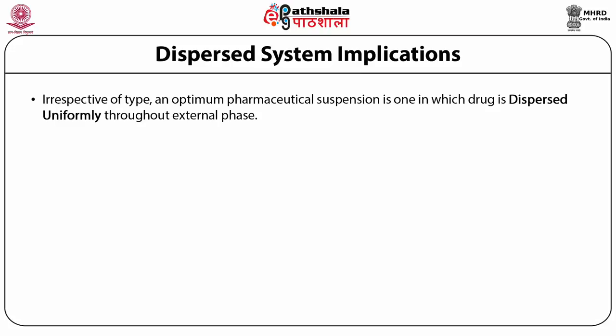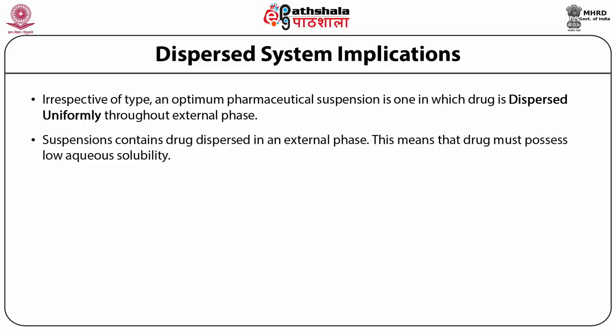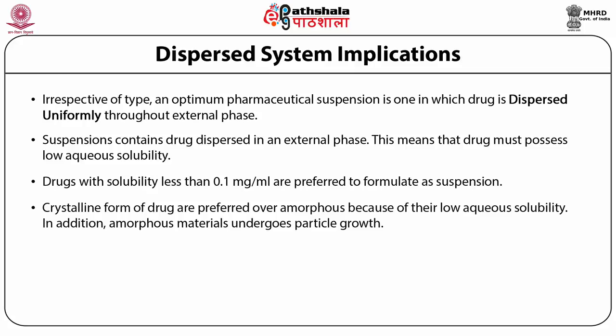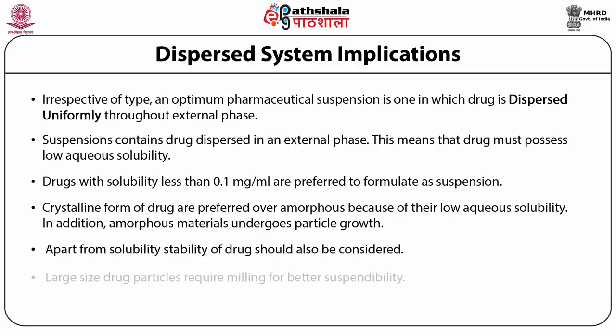Irrespective of type, an optimum pharmaceutical suspension is one in which the drug is dispersed uniformly throughout the external phase. This means that the drug must possess low aqueous solubility. Drugs with solubility less than 0.1 mg per ml are preferred to formulate as suspension. Crystalline forms of drugs are preferred over amorphous forms because of their low aqueous solubility. In addition, amorphous materials undergo particle growth. Apart from solubility, stability of drugs should also be considered. Generally, large size drug particles require milling for better suspendability.